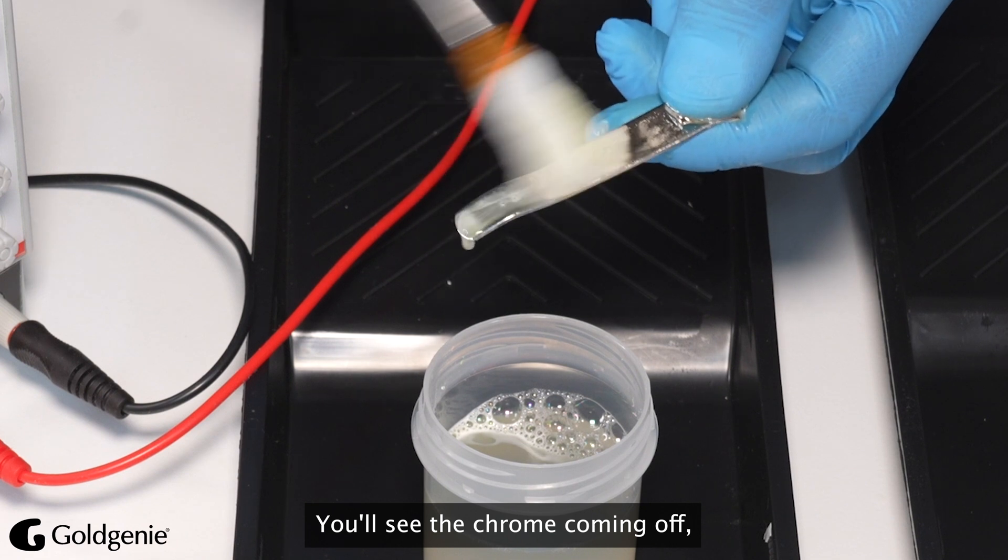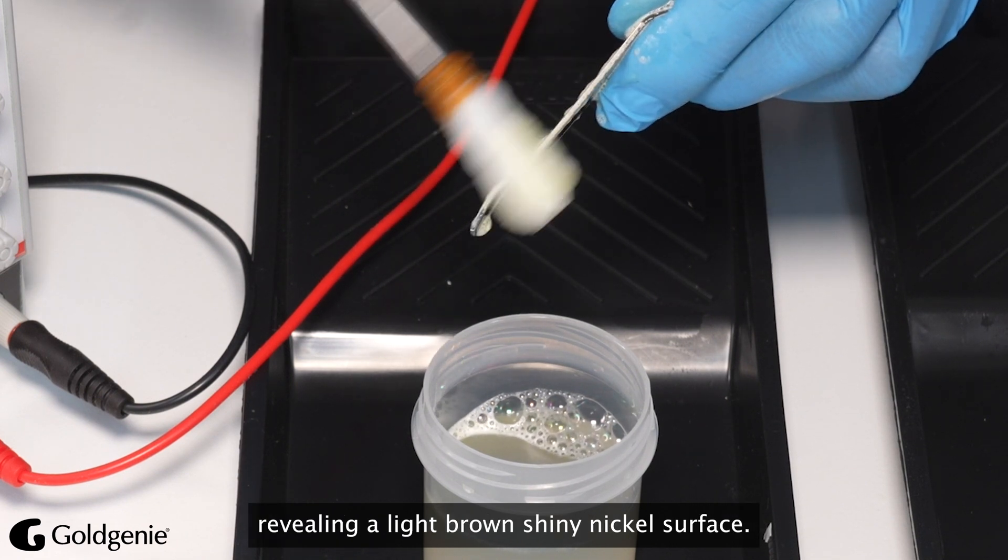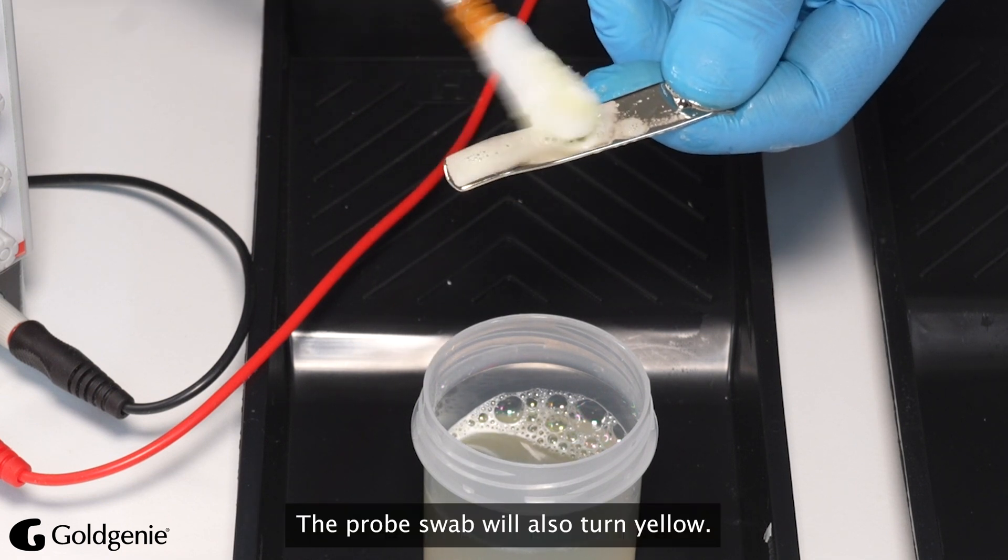You'll see the chrome coming off, revealing a light brown shiny nickel surface. The probe swab will also turn yellow.